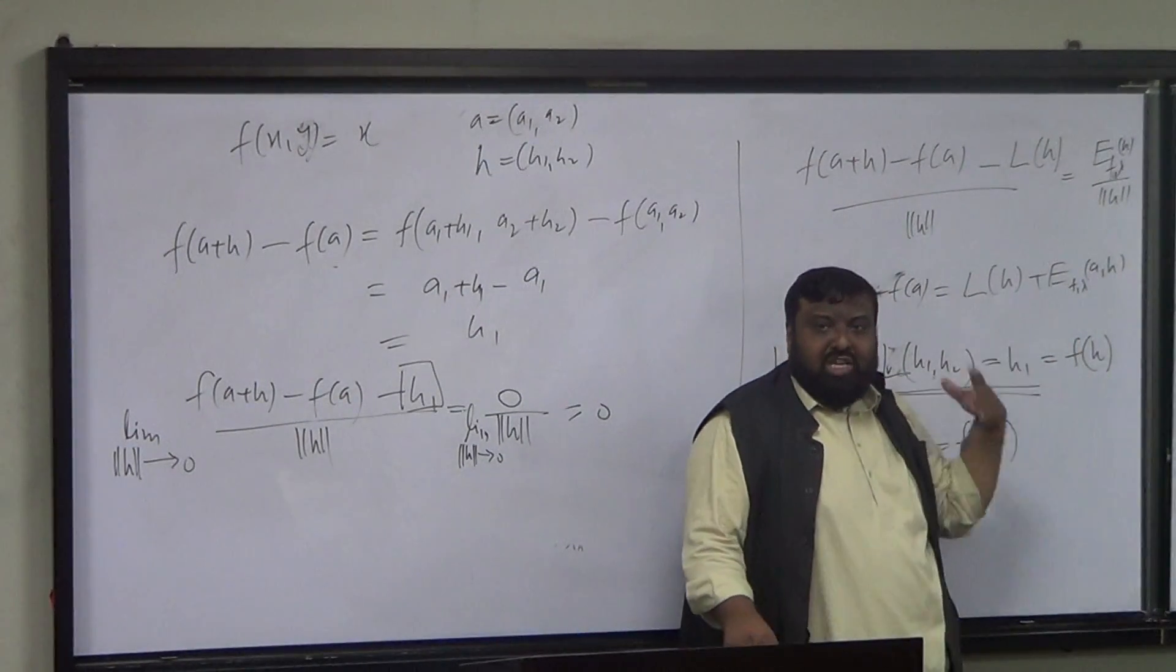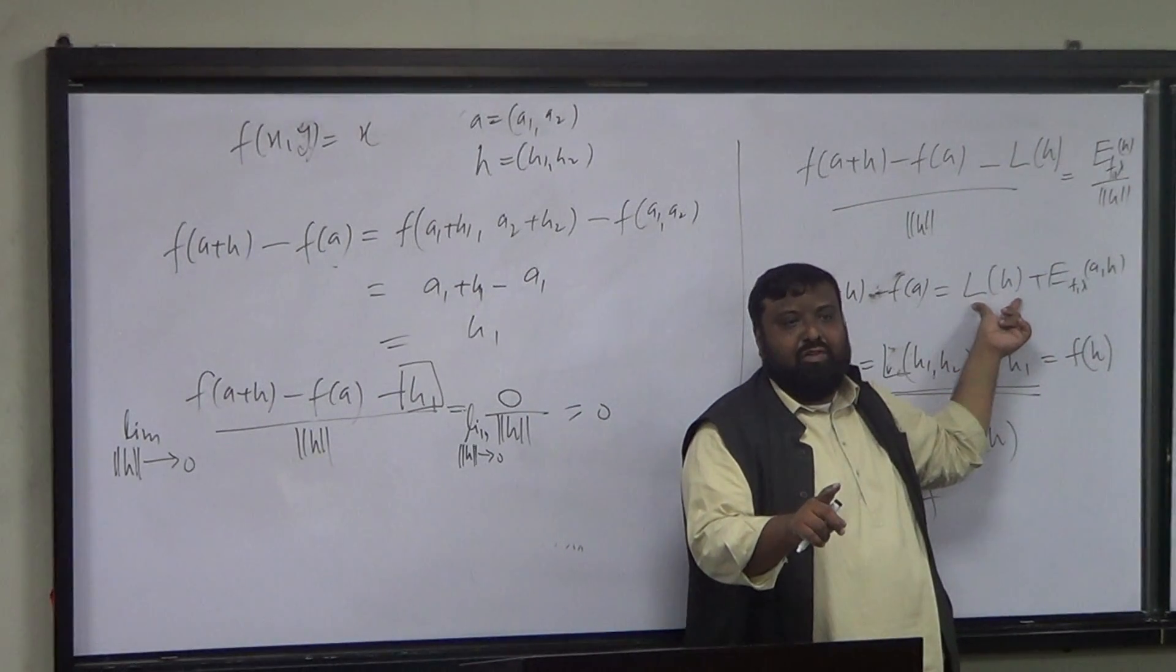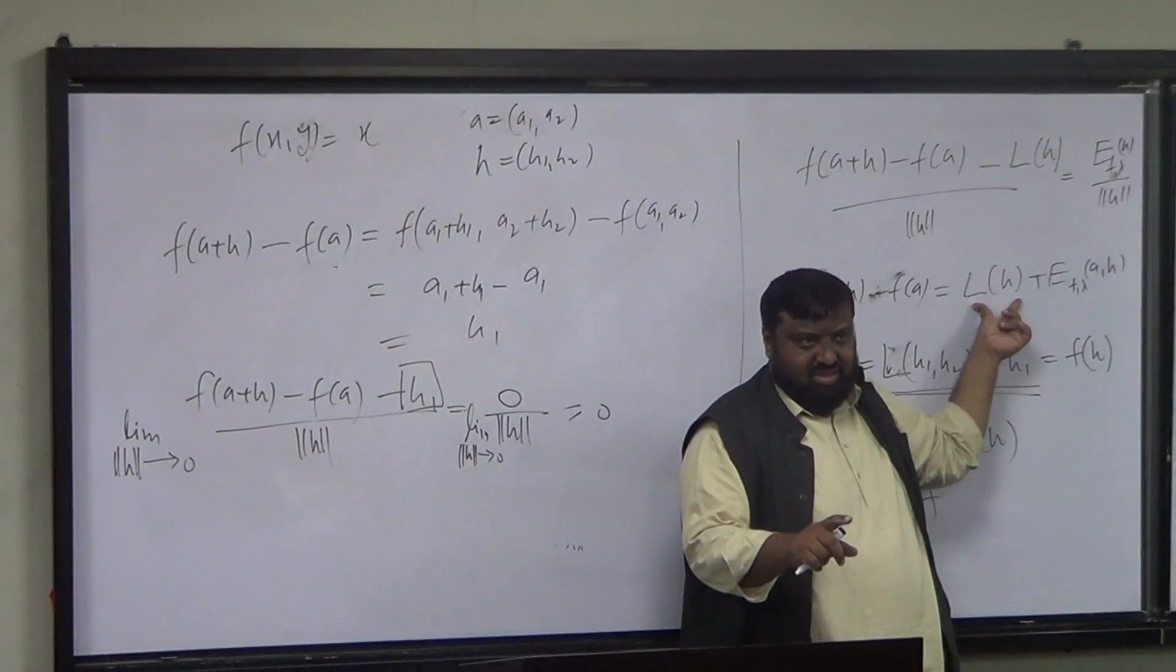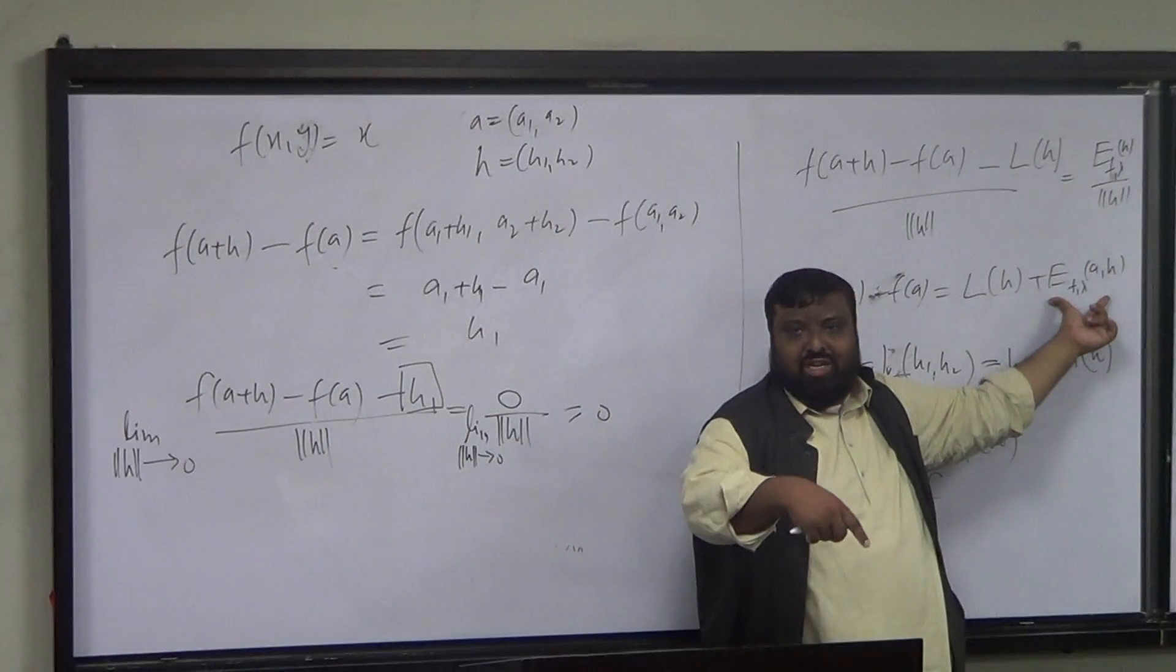So the term that is purely in terms of H, then you give it a name L of H, because that is your candidate for the derivative. And the term that involves A and H both, that is the error, actually.